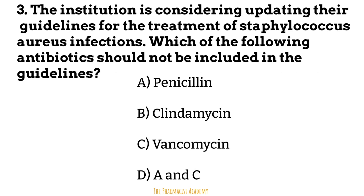Finally: the institution is considering updating their guidelines for the treatment of Staphylococcus aureus infections. Which of the following antibiotics should not be included in the guidelines? Based on the antibiogram, penicillin has the lowest susceptibility percentage, meaning there is a higher chance of resistance. So the correct answer is A.